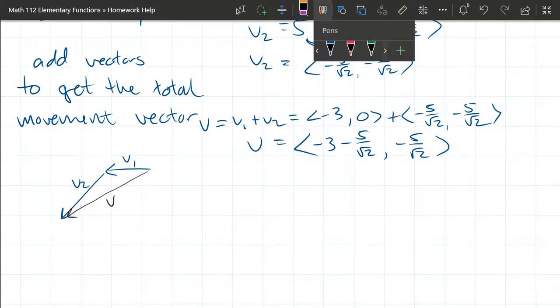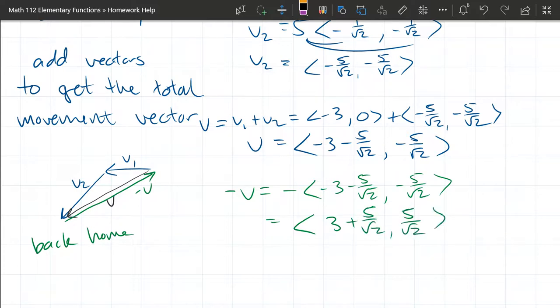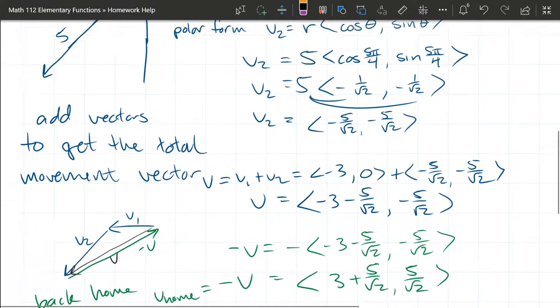Now to go home, let's switch to green. If we did another V, we'd be going way further away from home, so that's obviously not back home. What's back home going to be? The opposite of V. So negative V is going to be back home. Negative V is negative what we see up there, so distribute the negative sign in and you have <3 + 5/√2, 5/√2>. That's negative V, and we'll call it V_home.